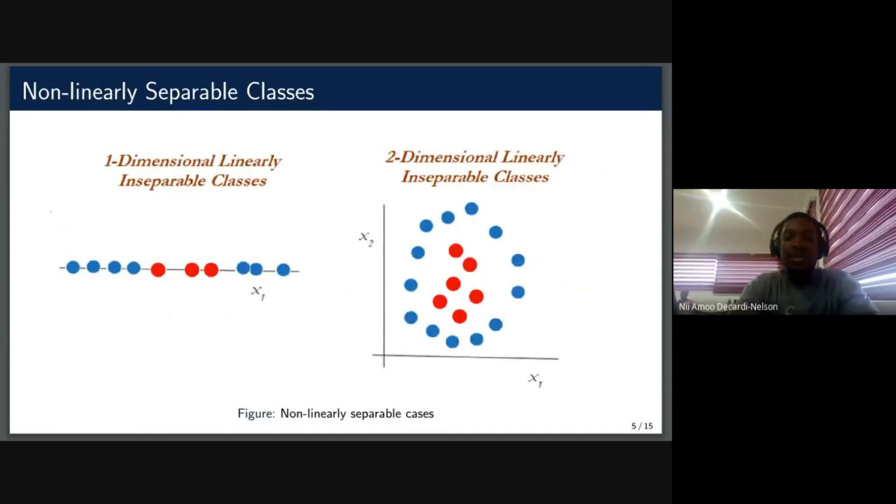The problem with support vector machines come in when you have non-linearly separable cases. So on the left, we realize that you have a linear data set, but then you have two classes. If you want to separate this, you need at least two lines, one over here and then one over here. But the way the support vector machine works by default is using just one linear classifier. The same happens in this situation. You will not be able to use a support vector machine to separate this data set using just one line.